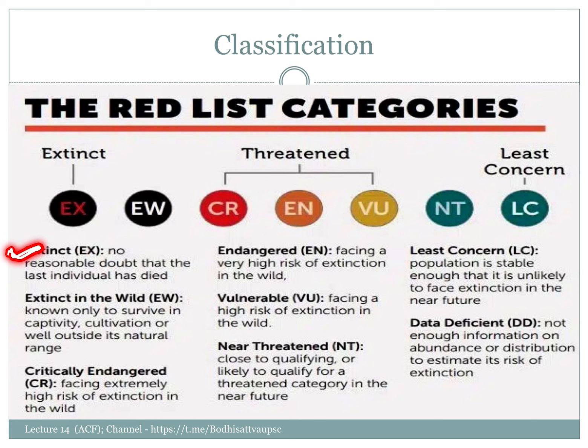Extinct: we are completely dead, we don't have one species remaining — that is the Extinct category. Extinct in the Wild: the species still survives but only outside nature, such as in a gene bank.